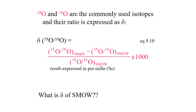The equation on the screen here — Equation 9-10 — basically takes the ratio of the sample, subtracts the standard (for the case of oxygen), divides by the standard, and multiplies by a thousand. This gives us a relatively easy number to work with.